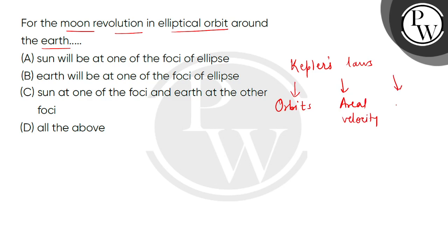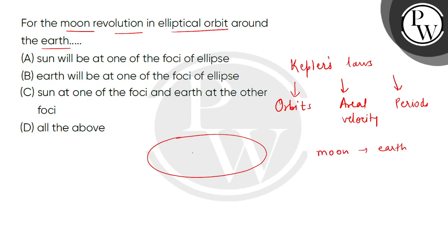According to the first law, every planet revolves around the sun in an elliptical orbit. Now we are talking about the moon and Earth combination. Here the moon is revolving around the Earth, with the Earth at one focus of the ellipse.